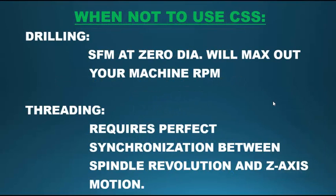There are a couple of operations where you do not want to use constant surface speed. One of them would be drilling, because the RPM would max out since you are drilling at zero diameter, so even at one surface feed per minute you would max out your machine RPM. Then there is threading. Threading requires perfect synchronization between spindle revolution and z-axis motion, so it is not capable of maintaining constant surface speed.